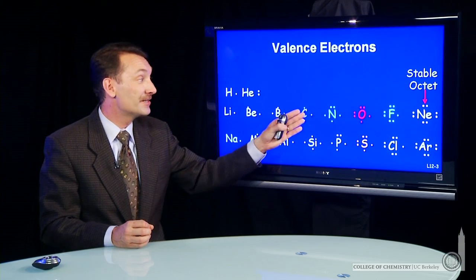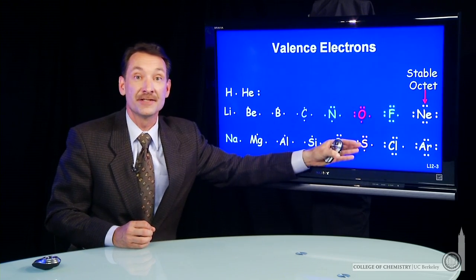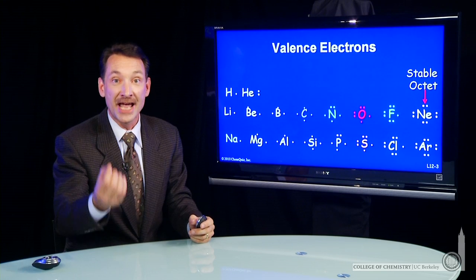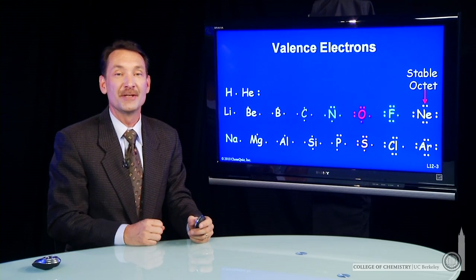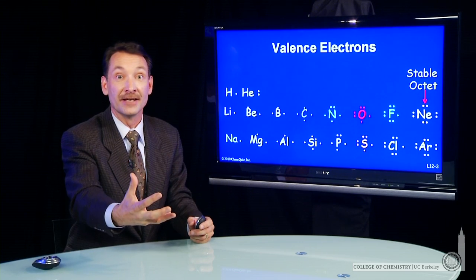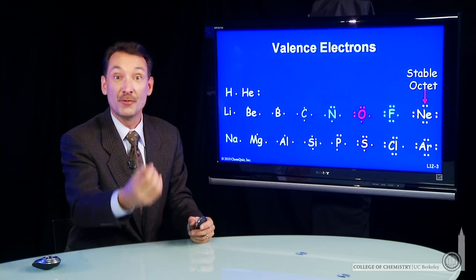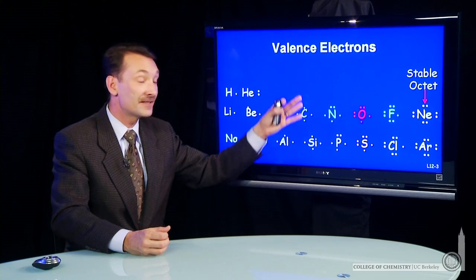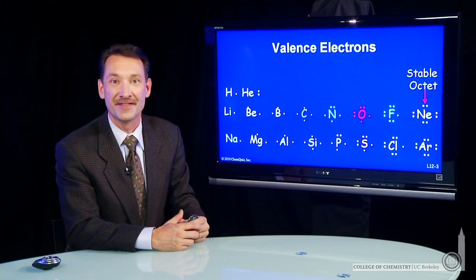But what we're going to look at now is how these valence electrons affect the bonding and the reactions of the elements in the periodic table. In fact, reactions and bonding are the subject of pretty much the rest of chem 1. And the valence electrons are going to help us understand that.